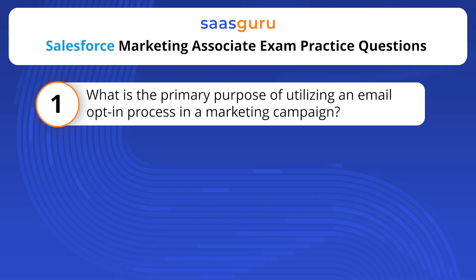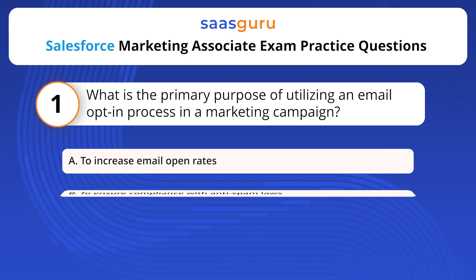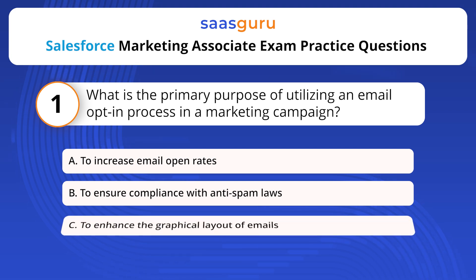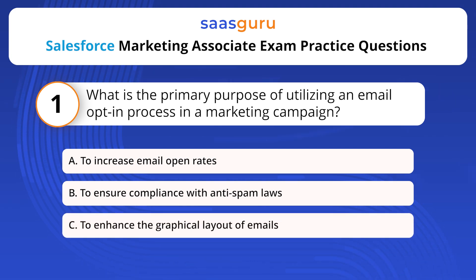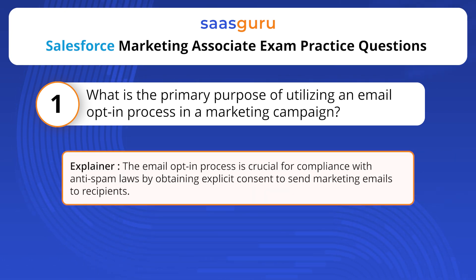What is the primary purpose of utilizing an email opt-in process in a marketing campaign? Options: To increase email open rates; to ensure compliance with anti-spam laws; to enhance the graphical layout of emails. The answer is option B. The email opt-in process is crucial for compliance with anti-spam laws by obtaining explicit consent to send marketing emails to recipients.